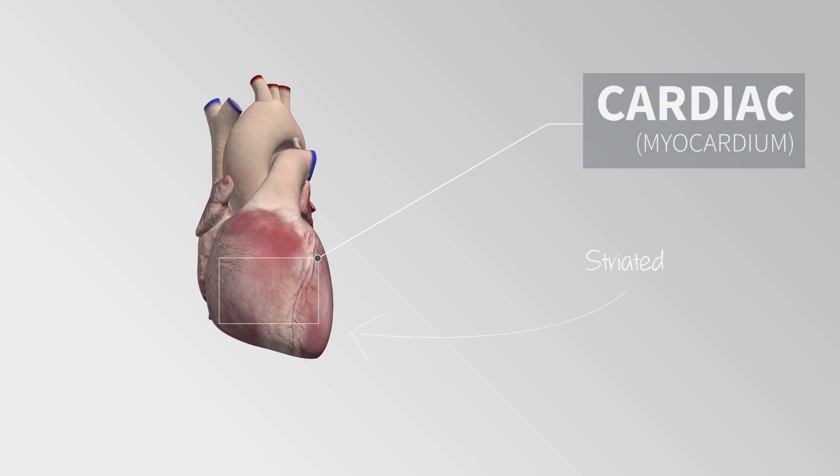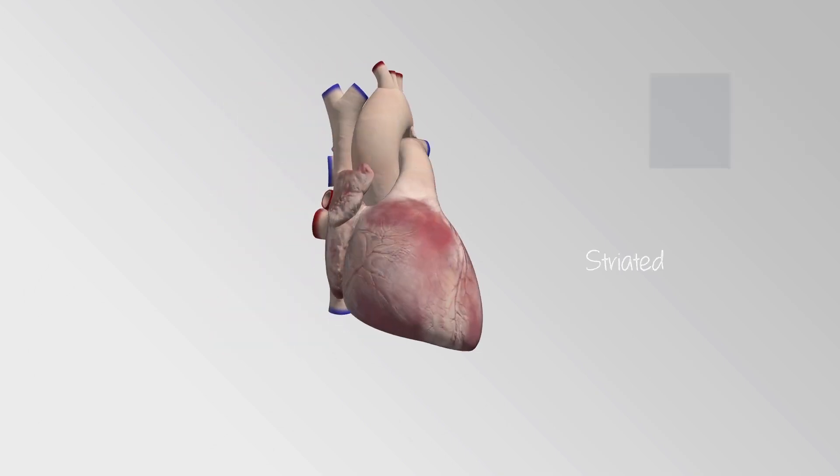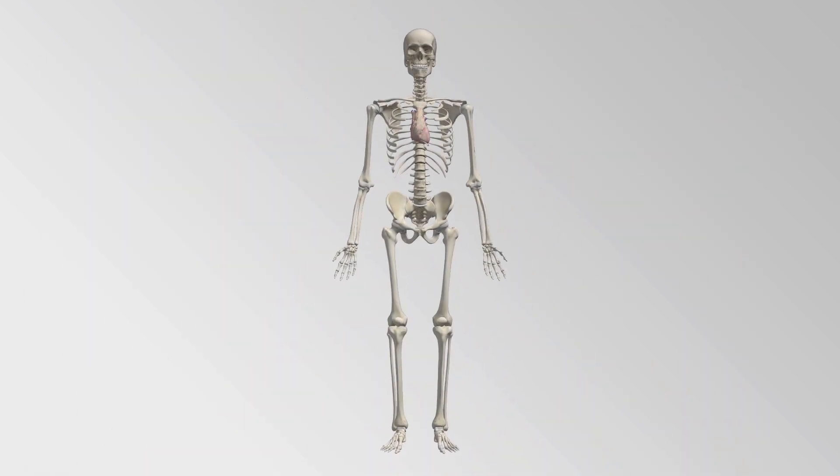Cardiac muscles are found in the walls of the heart. They also contract involuntarily but have a striated appearance.